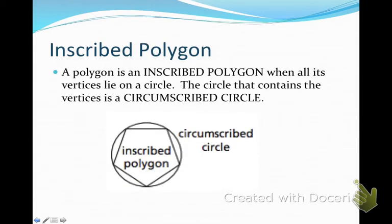Another angle deals with inscribed polygons. A polygon is an inscribed polygon when all its vertices lie on a circle. So if we look at our little diagram, this pentagon, all the vertices lie in the circle. So that polygon is inscribed in that circle. The circle that contains the vertices is called a circumscribed circle.